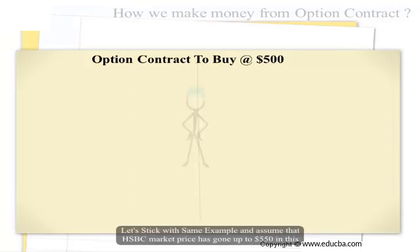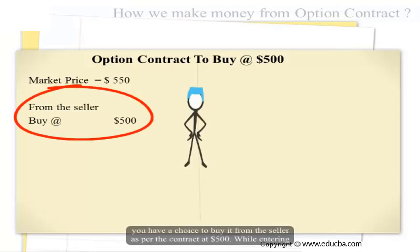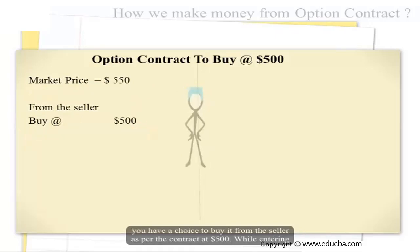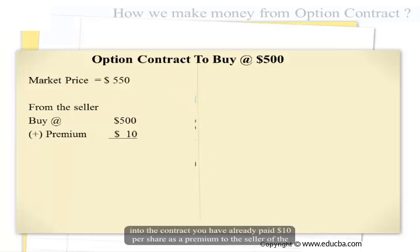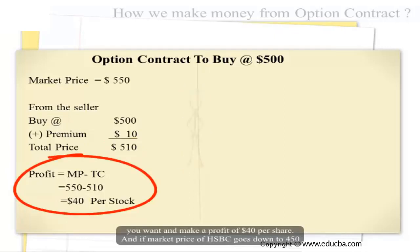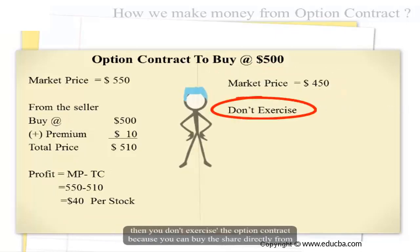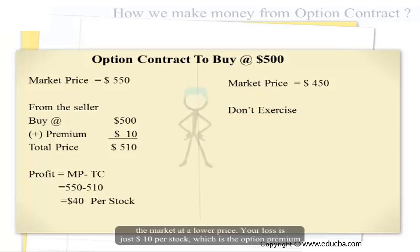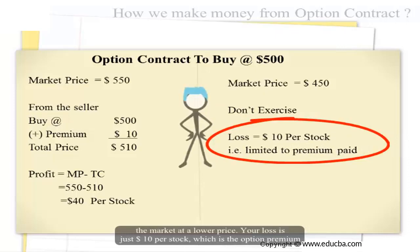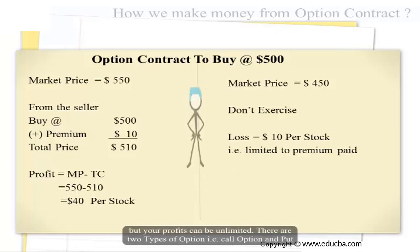Let's see how we make money from this options contract. Assume the HSBC market price has gone up to $550. You have a choice to buy from the seller at $500 as per the contract. Having already paid $10 per share as premium, your cost is now $510 per share. You can sell it in the market and make a profit of $40 per share. If the market price of HSBC goes down to $450, you don't exercise the option — you buy directly from the market. Your loss is just $10 per stock, which is the option premium paid. That is the beauty of an options contract: it limits your losses to the premium paid, but your profits can be unlimited.